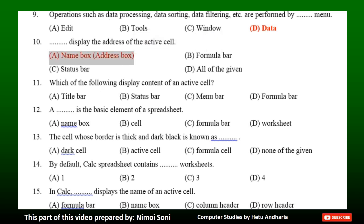Question 11: Which of the following displays the content of an active cell? Option A: Title bar. Option B: Status bar. Option C: Menu bar. Option D: Formula bar.